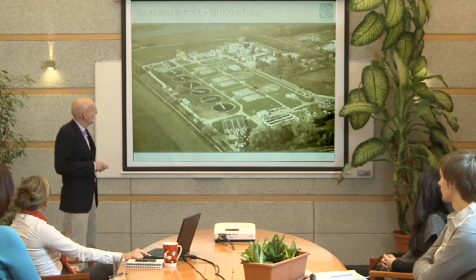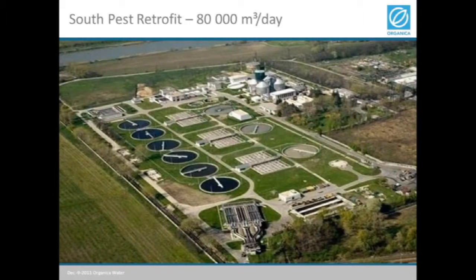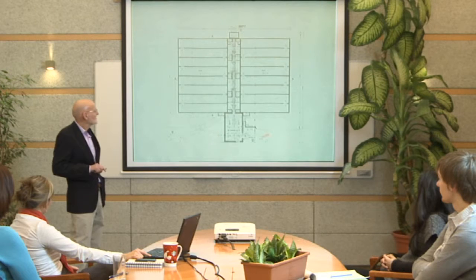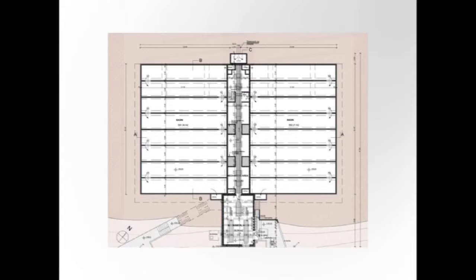More capacity is needed and better treatment characteristics are required. So what we're doing now is transforming these open basins — these three trains, as they say — into organic technology. On the next slide you can see how this treatment plant was originally built. In each train there are actually two sections, two sub-trains, and the water flows in a labyrinth manner. That's how this particular plant was designed 50 years ago.